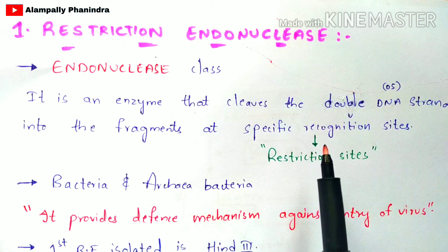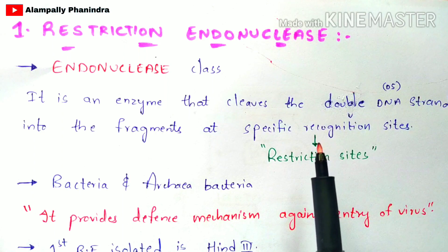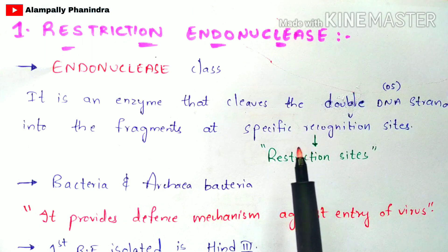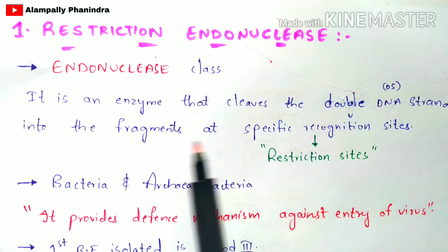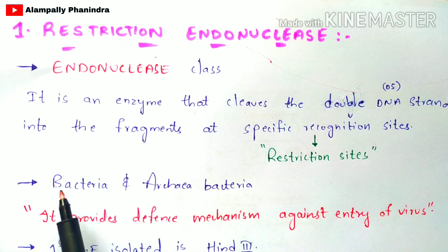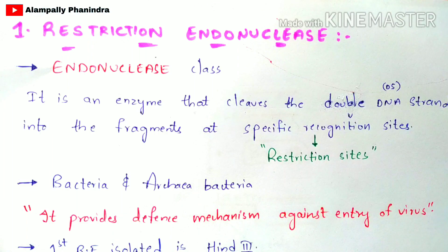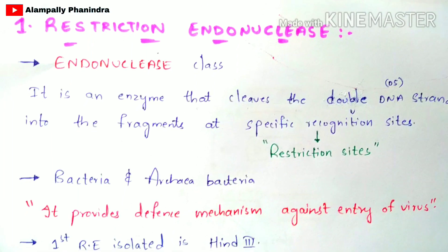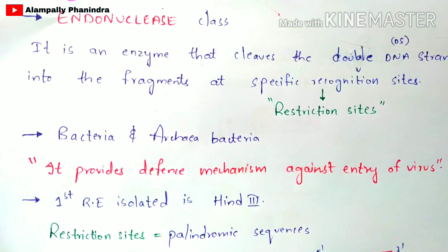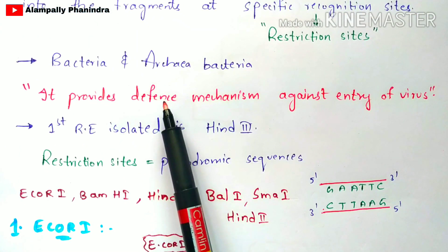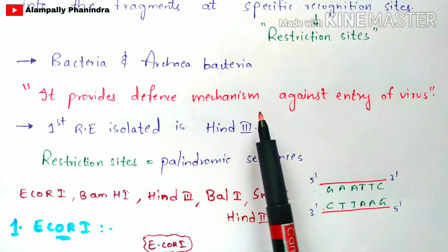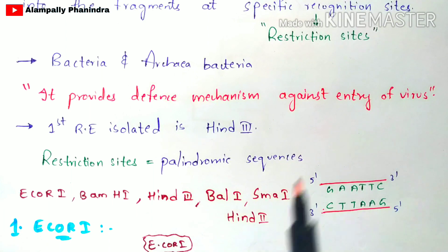Before entering into the mechanism, you have to know the basic introduction of this restriction endonuclease enzyme. The restriction endonuclease enzyme is present in bacteria as well as archaebacteria. One of the major functions performed by this restriction endonuclease enzyme is that it provides a defense mechanism against the entry of viruses.